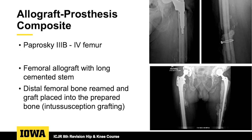Paprosky 3B or 4 femurs — this involves using an entire cadaver femoral allograft for a long cemented stem. The distal femoral bone remaining in this patient — maybe about four inches of femur left above the knee — is reamed, the graft is then prepared and impacted in with a stem; we call that impaction grafting. There are some good results with allograft prosthesis composite in some of the worst defects.